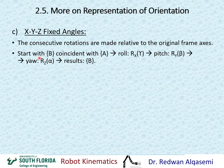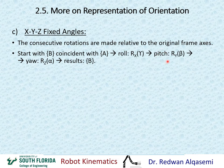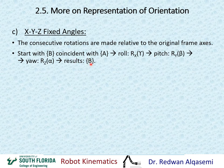We start with frame B coincident with frame A at the very beginning, and then we perform what's called a roll — a rotation about x by the amount of gamma. Then we perform a pitch, which is a rotation about y by beta, and then a yaw rotation, which is a rotation about z by the amount of alpha.